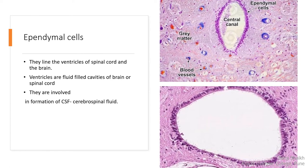The brain and the spinal cord have ventricles, which are cavities or canals. This cavity is lined by a layer of cells called ependymal cells. These cells are glia cells responsible for the secretion of cerebrospinal fluid, which is a nourishing fluid.